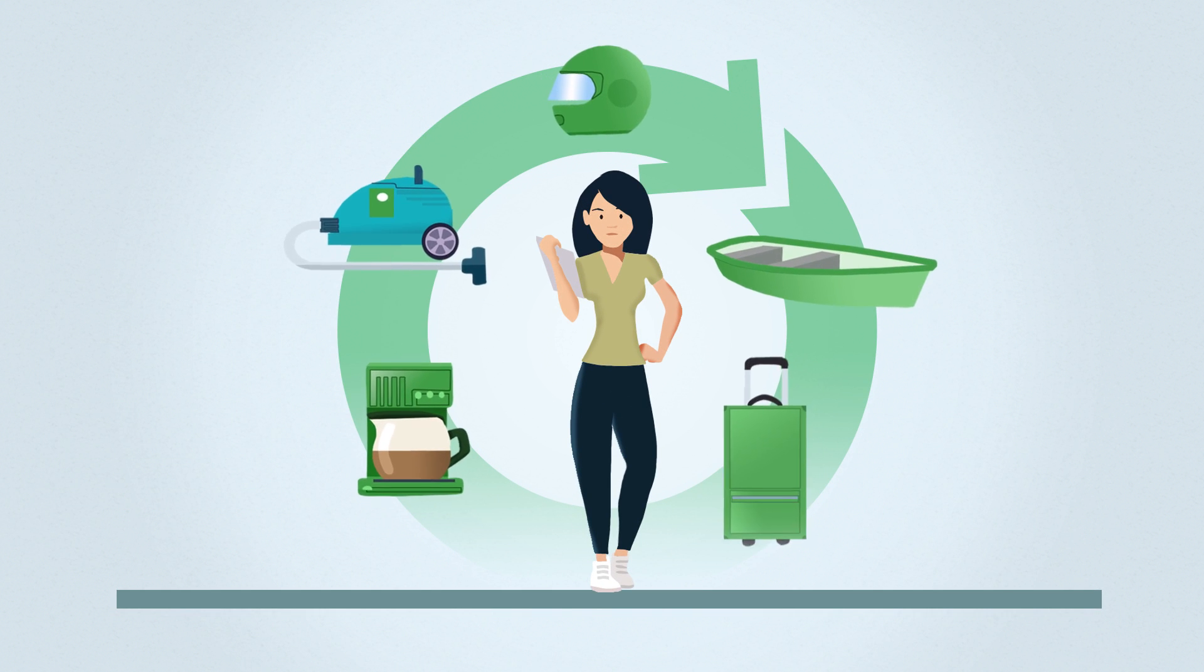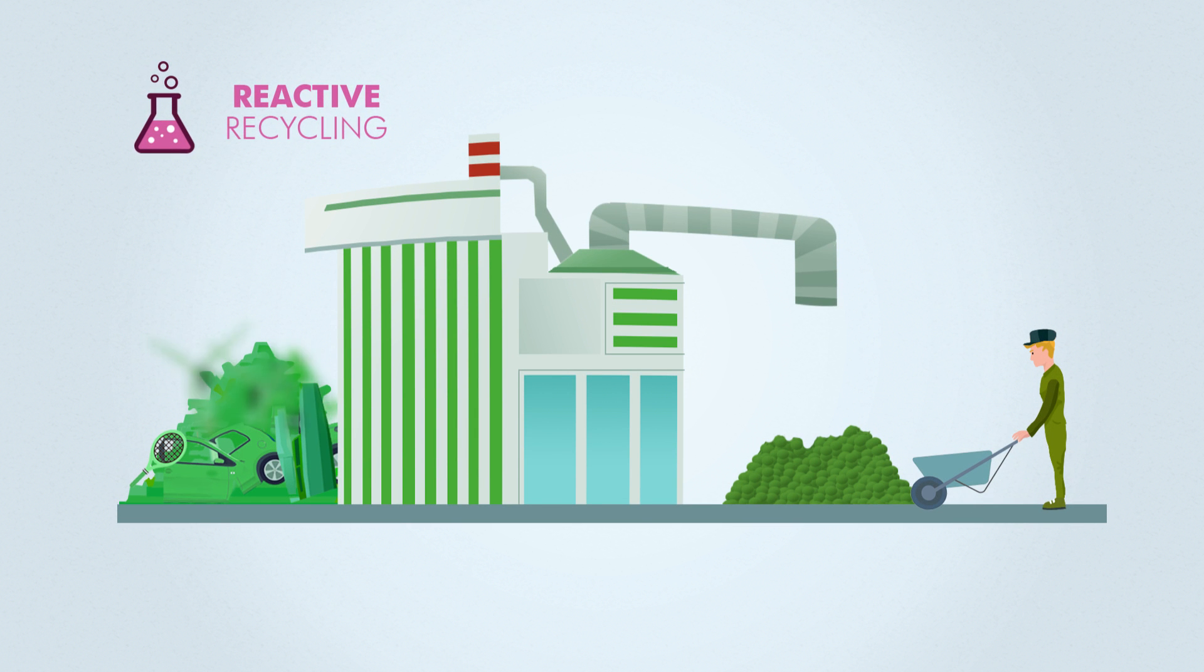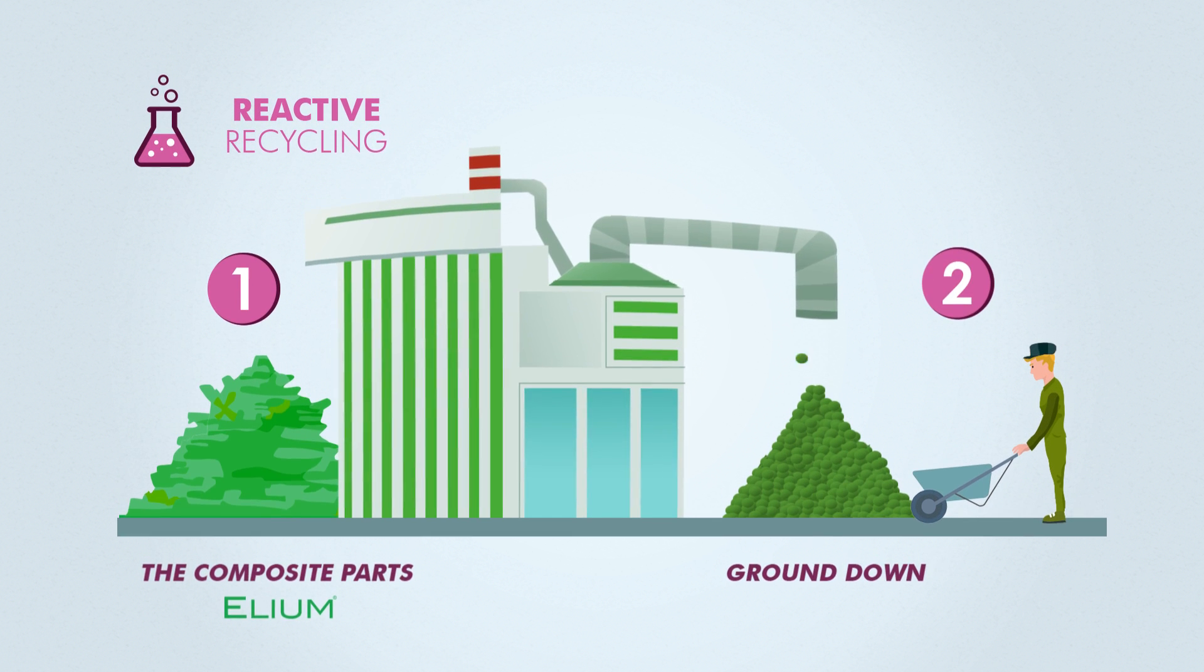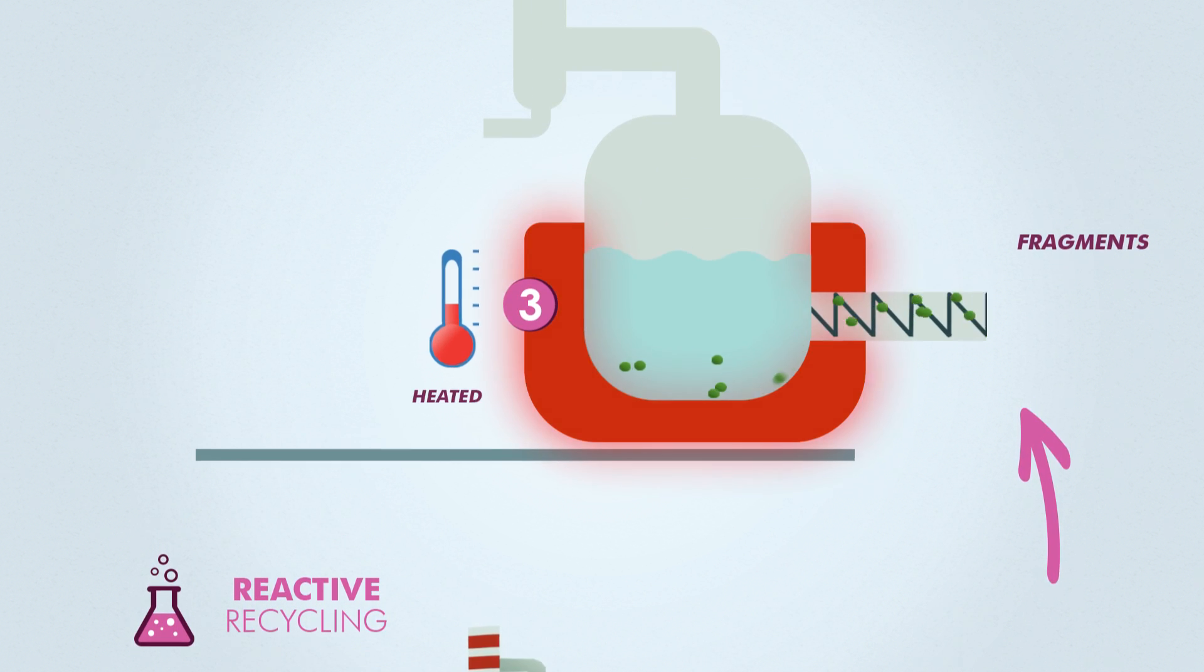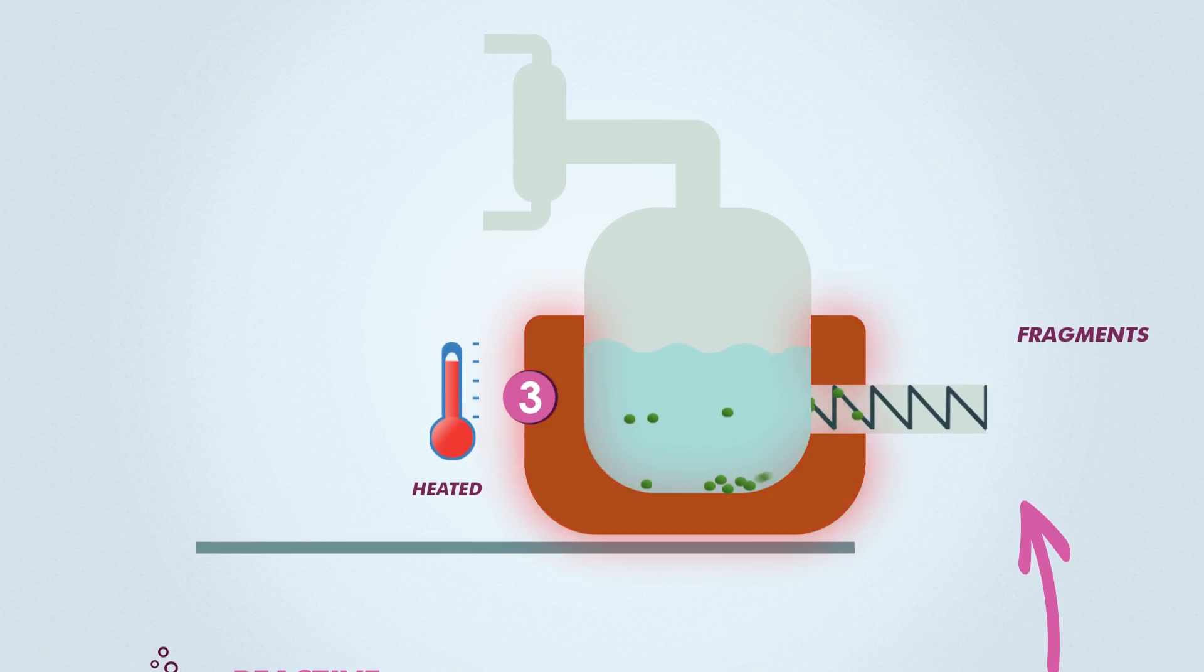They can be used to make household appliances or elements such as these. In the reactive recycling process, once again the parts are ground down. The resulting fragments are then heated at high temperature to recover the constituents.